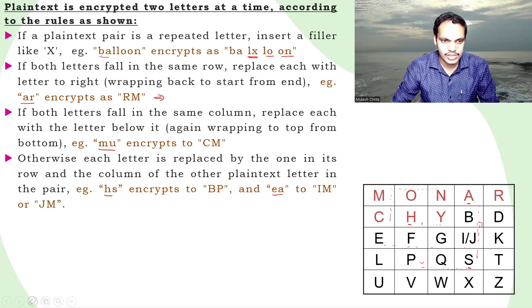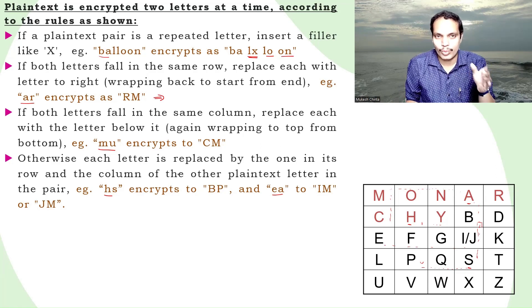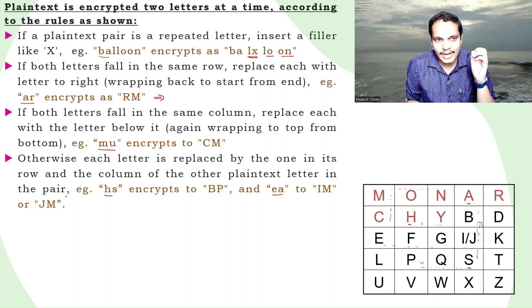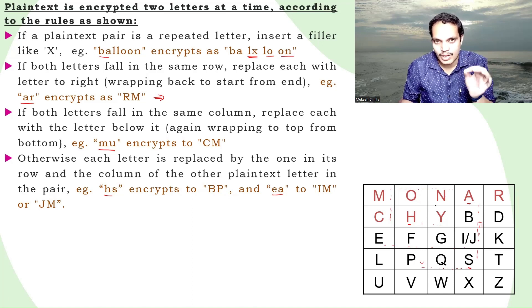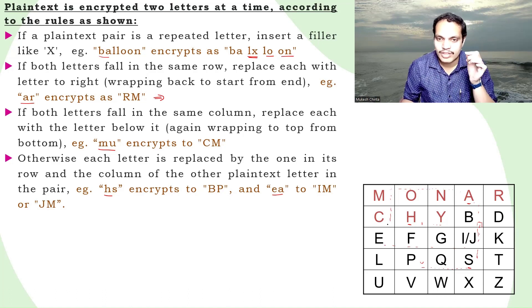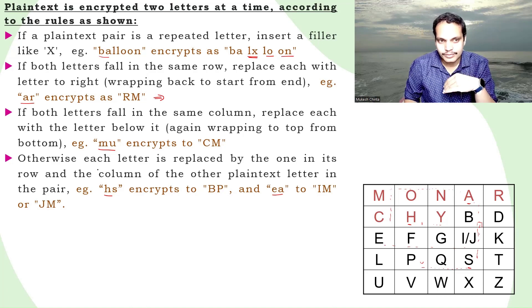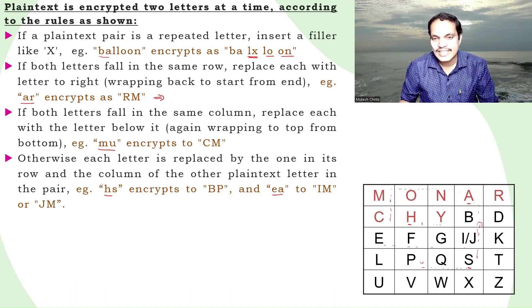Let me summarize the rules: First, break plaintext into pairs, ensuring no pair has repeated characters. Second, generate your 5x5 matrix using the keyword. If both letters are in the same row, replace each with the letter immediately to the right. If both letters are in the same column, replace each with the letter below. If they're in neither the same row nor column, replace each letter with the one in its row and the column of the other plaintext letter.